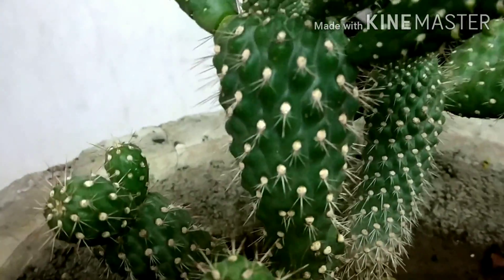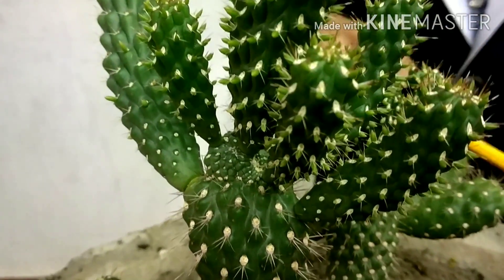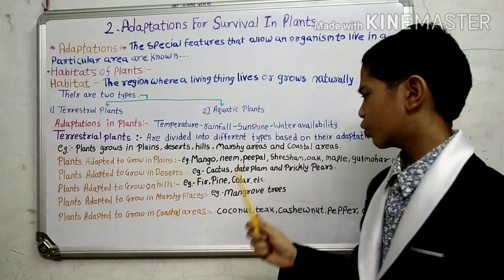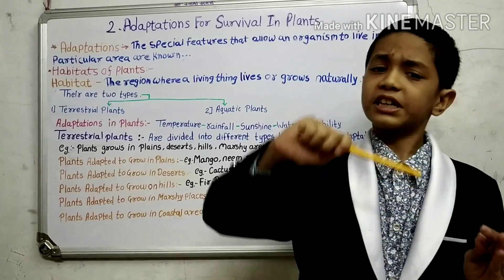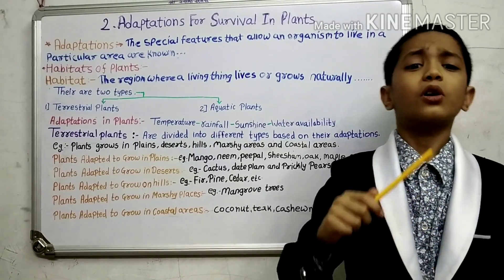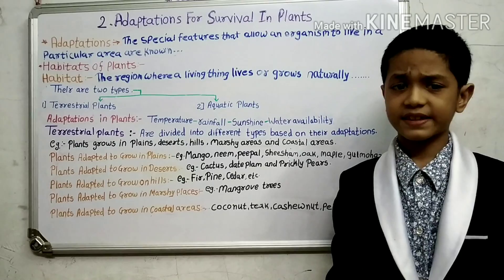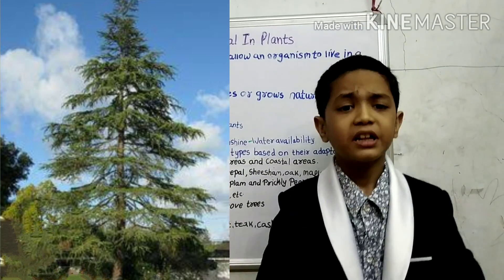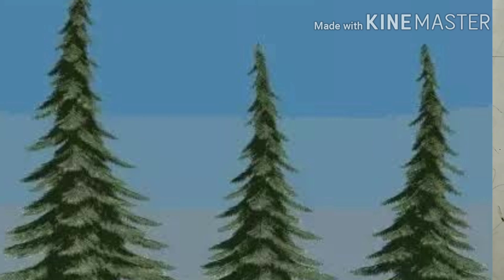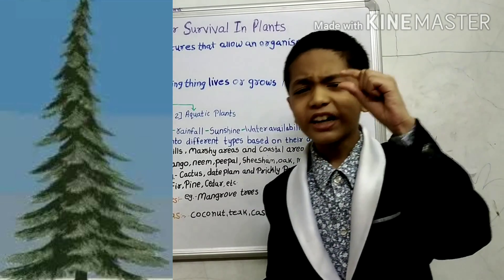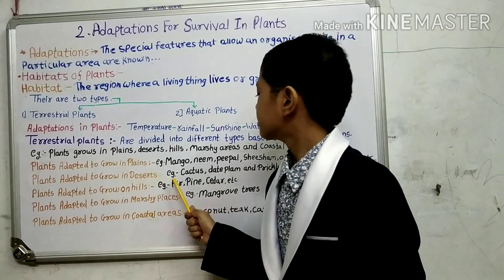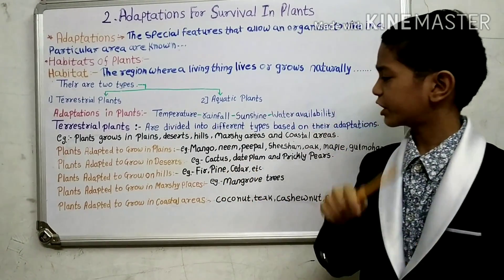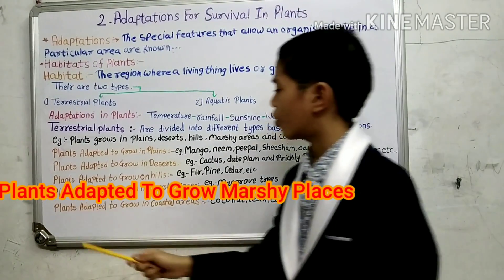Here you can see a cactus plant with many spines on it. Now let's study on the board. Plants adapted to grow on hills — plants such as fir, pine, and cedar grow on hills and mountains. The climate is cold in the mountains and snowfall is frequent. These plants are tall, straight, and conical in shape to allow snow to slide down. The leaves of these plants are covered with a thick waxy coating and are needle-like, which helps in minimum water loss and allows snow to shed off easily.